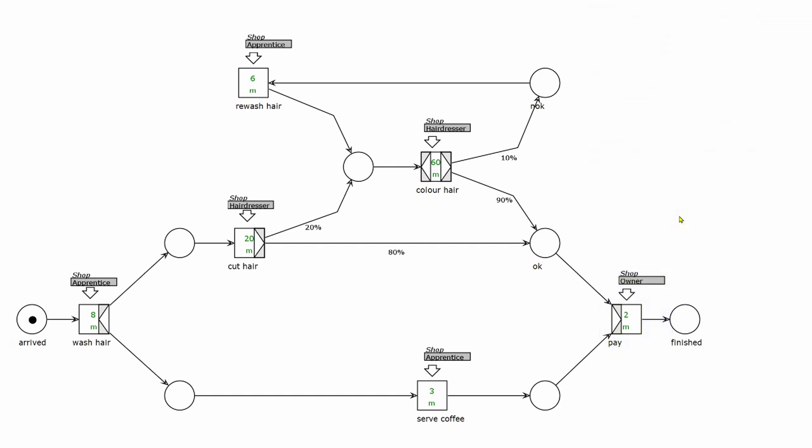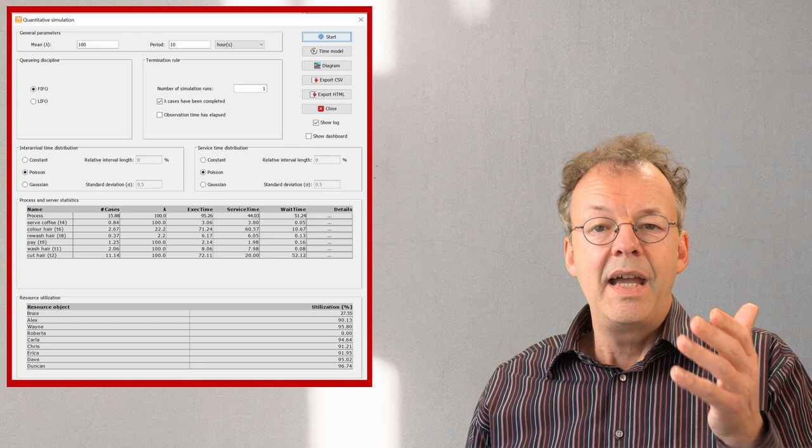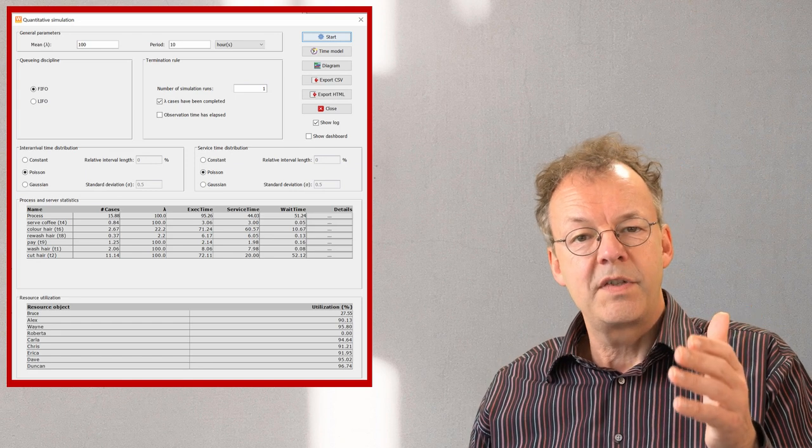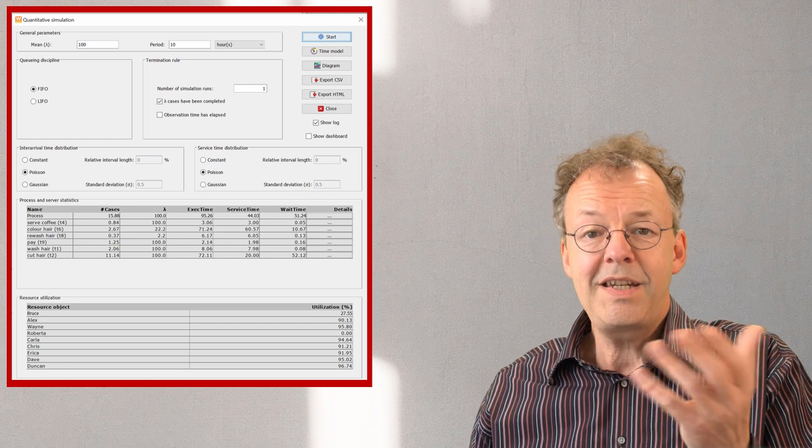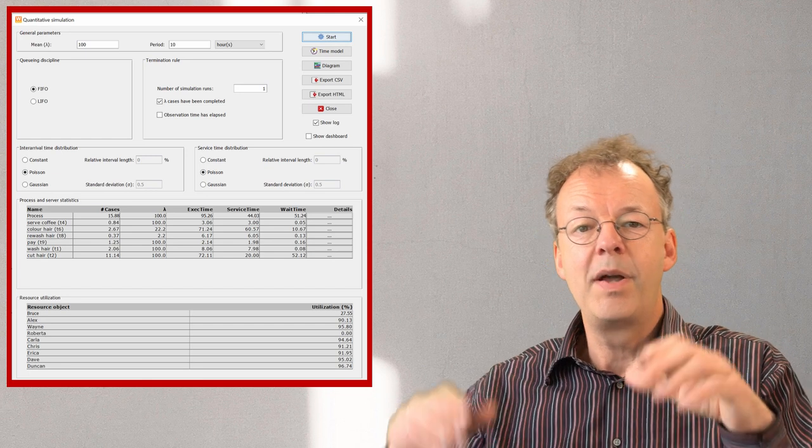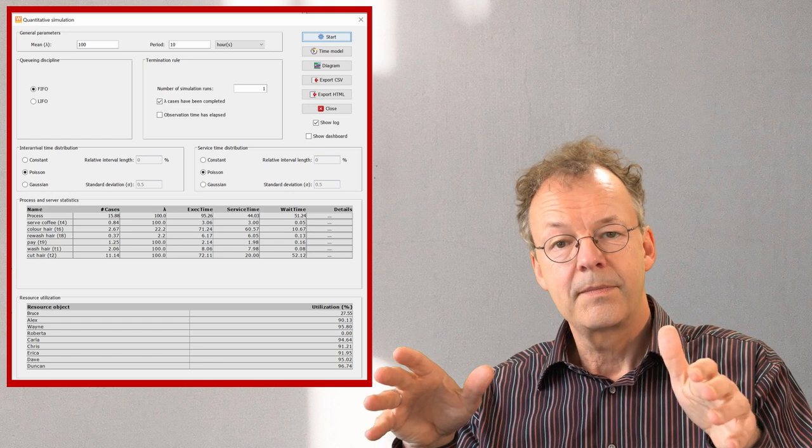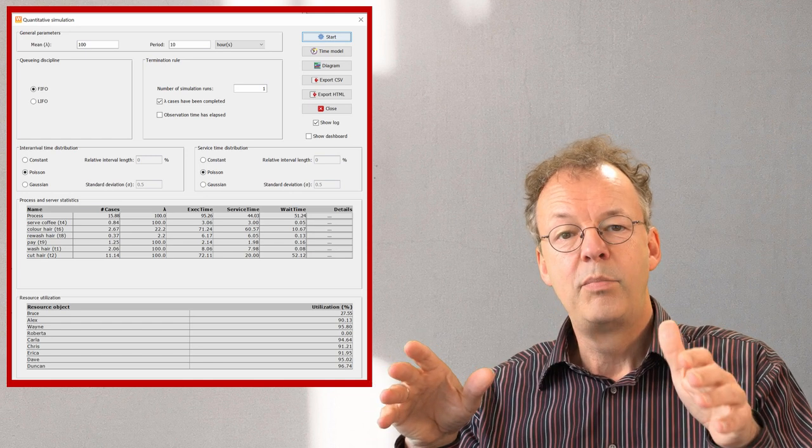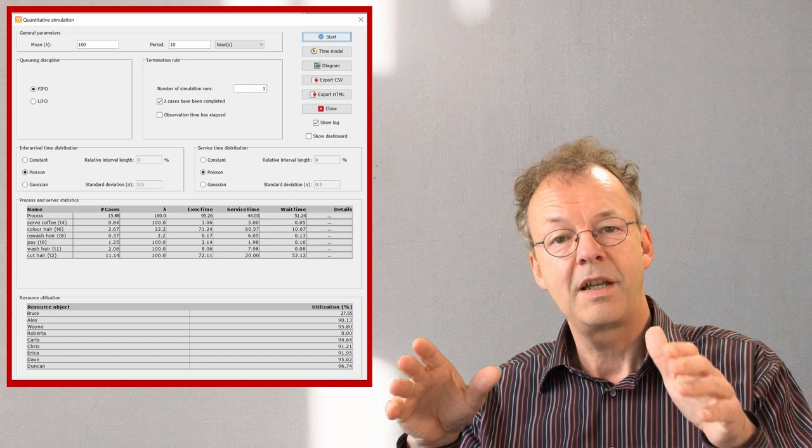We already have Bruce with the owner role in our Woped file. If we do the quantitative simulation with our changed model, we can see that the average waiting time before pay has nearly vanished. Bruce is now nearly 30% busy cashing money.